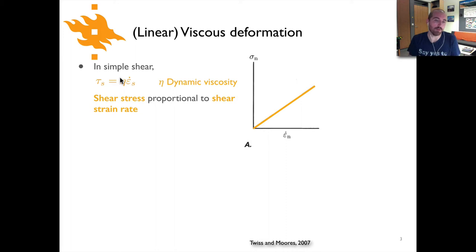Dynamic viscosity is basically a measure of the resistance to flow of a fluid. Higher viscosity means that fluids are less willing to flow, or resist flow more strongly.